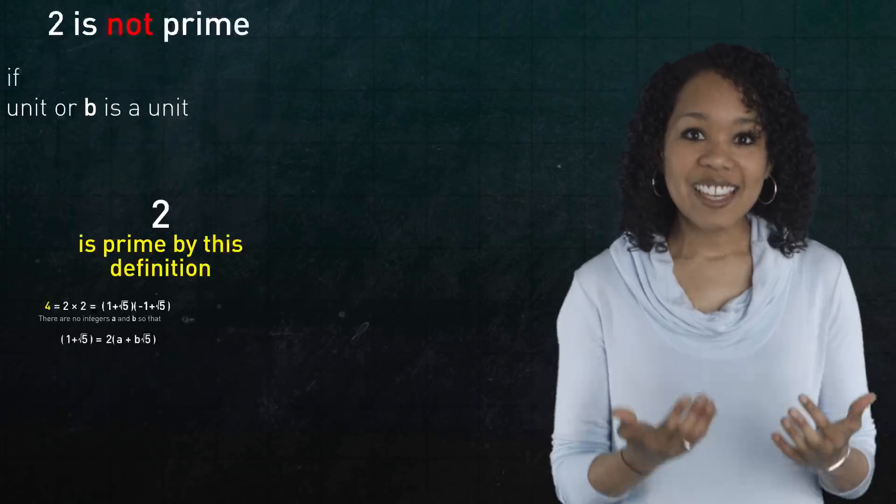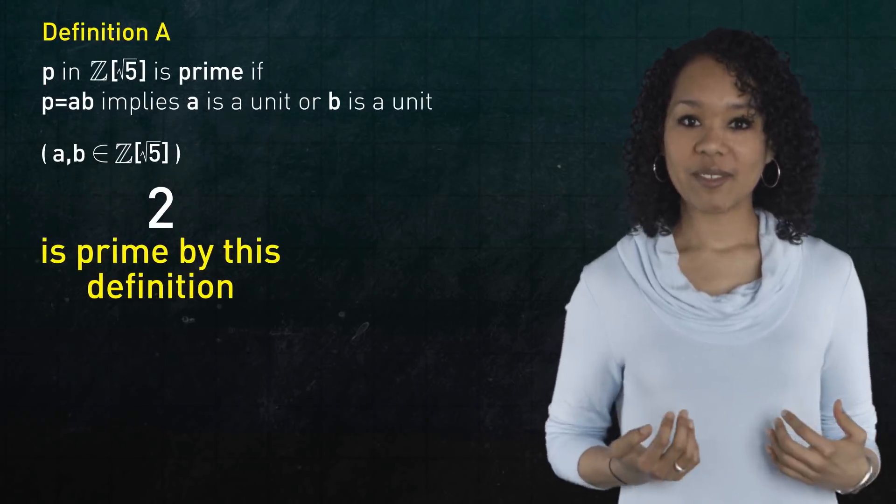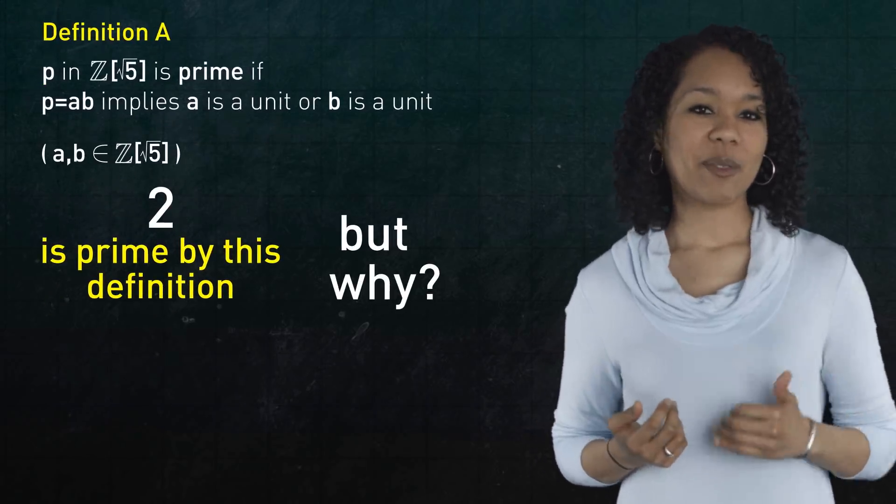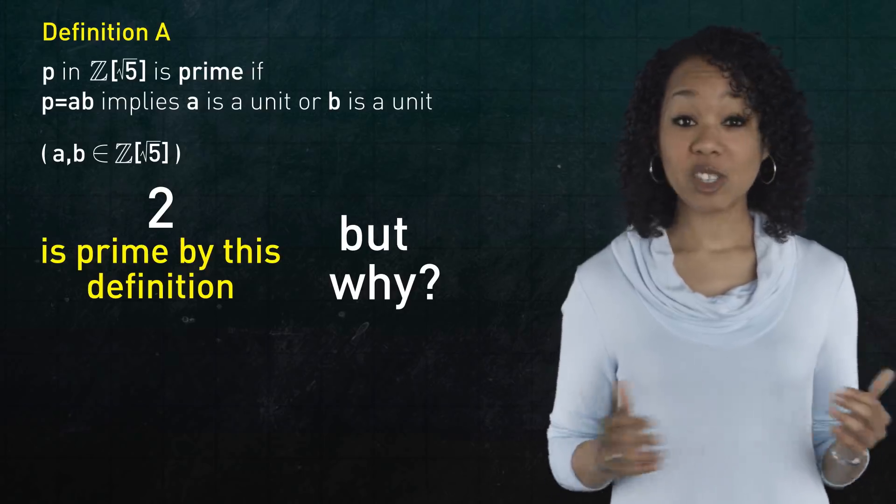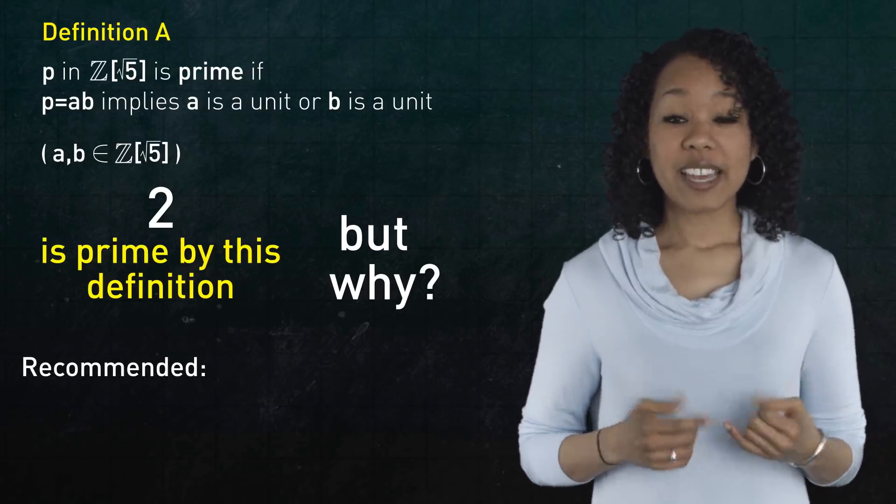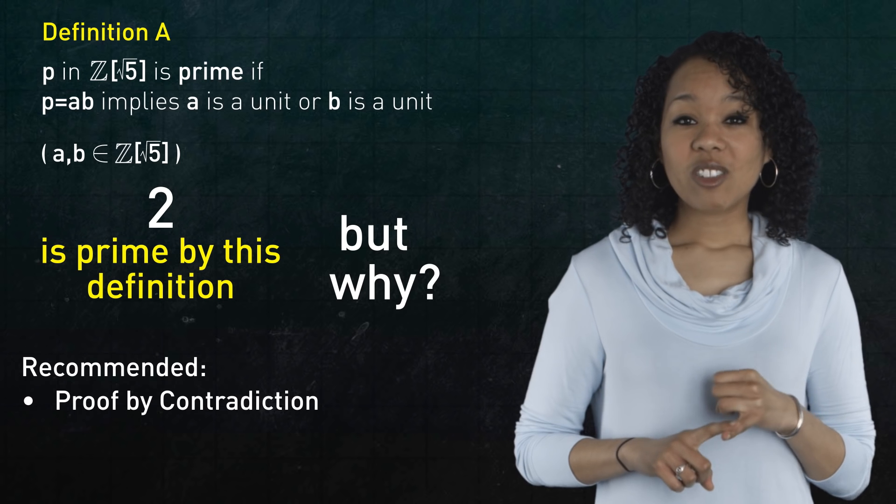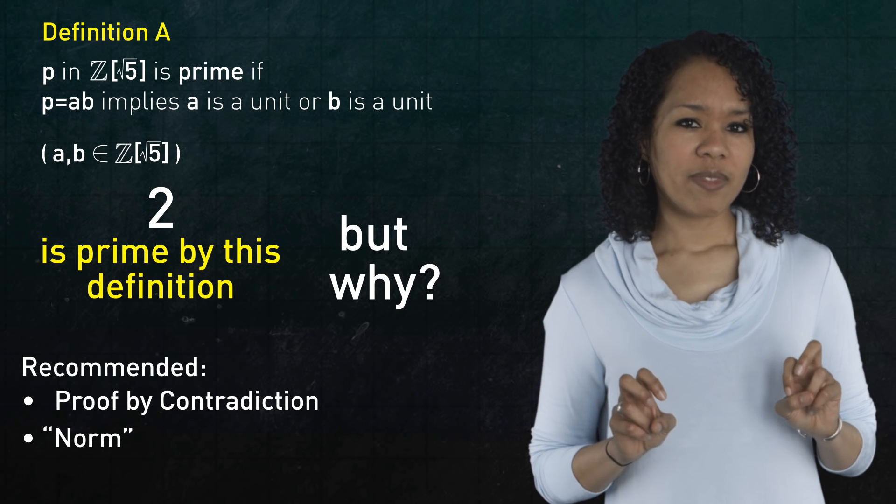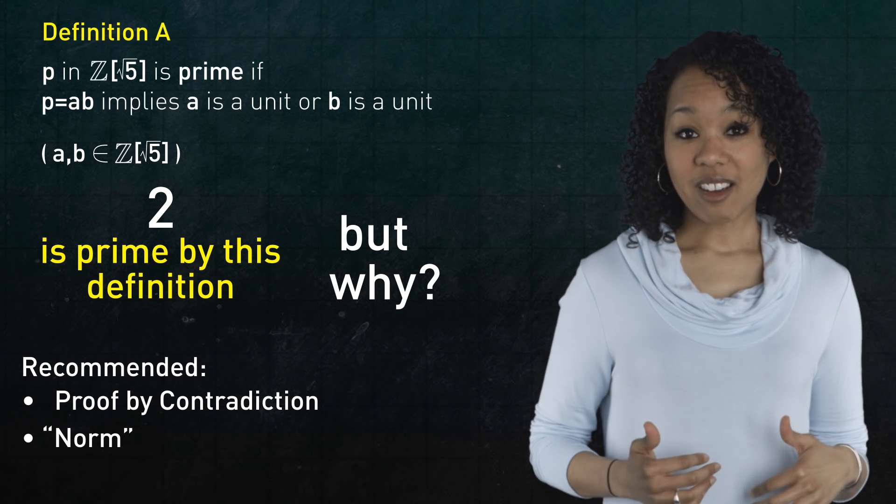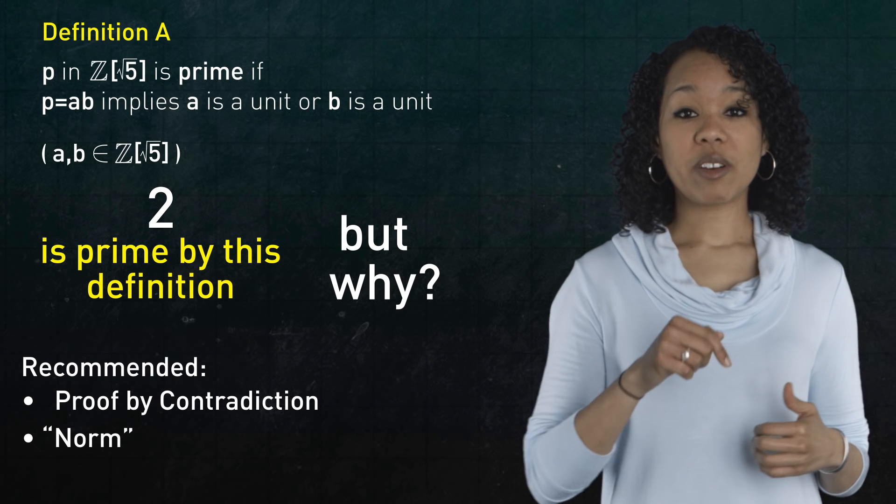However, it is prime by definition a. Why? I'll let you work that one out. It's a little trickier, but not too much. I recommend using a proof by contradiction, along with something called a norm. I won't go into the computations now, but if you're interested, check out the references below.